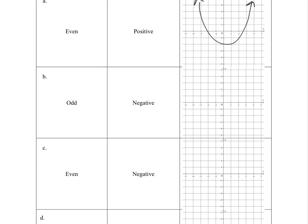Now if it's odd and negative, that means our end behavior over here is to infinity and over here is to negative infinity. There's an odd graph with a negative leading coefficient.